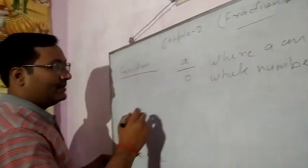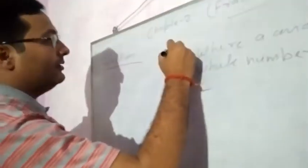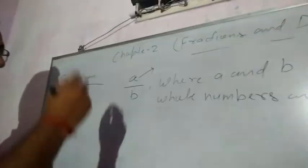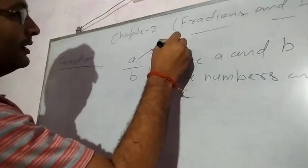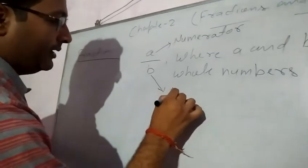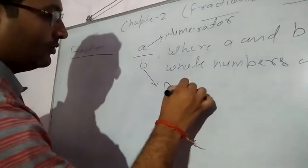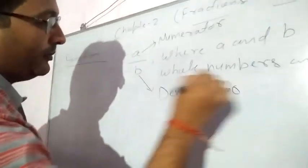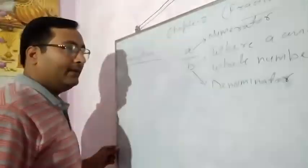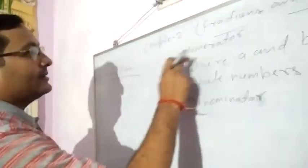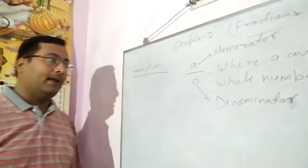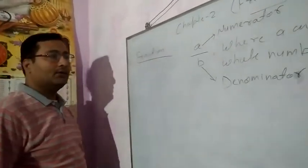So in the fraction A by B, what is the name of the upper side of that line? It is called the Numerator. And the lower part is called the Denominator. So A is called the numerator and B is called the denominator. The condition here is B is not equal to 0, because if any number is divided by 0, then that number is not defined.